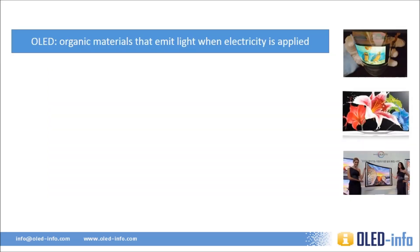An OLED is an organic light-emitting diode that is made from organic carbon-based materials that emit light when electricity is applied. OLEDs can be used to make both displays and white OLED lighting panels. In OLED displays, each pixel is made from small red, green, and blue sub-pixels, although some OLEDs use a white OLED emitter with color filters. An OLED lighting panel can be considered as a single white pixel OLED.